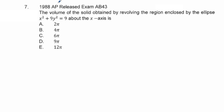This is the 1988 AP released exam for AB calculus, problem 43. The volume of the solid obtained by revolving the region enclosed by the ellipse x squared plus 9y squared equals 9 about the x-axis is...